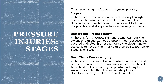Stage four: there is full thickness skin loss extending through all layers of skin, tissue, muscle, bone, and other structures such as tendons. The ulcer will look like a deep crater, and slough or eschar may be visible. Unstageable pressure injury: full thickness skin and tissue loss where the extent of damage cannot be determined because it is covered with slough or eschar; once removed, it can be staged as stage three or four. Deep tissue pressure injury: the skin area is intact or non-intact and is deep red, purple, or maroon; it may appear as a blood-filled blister, may be painful, and warmer or cooler than surrounding tissue. Discoloration may differ in darker skin.